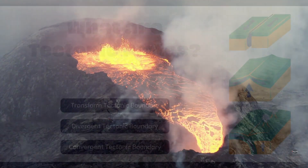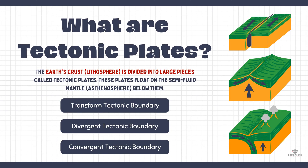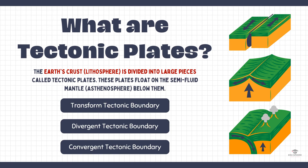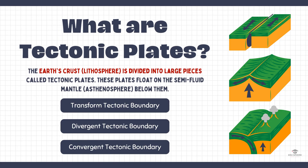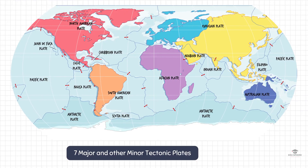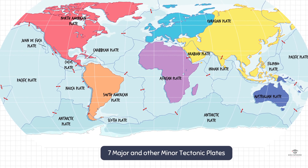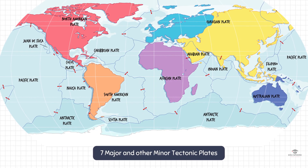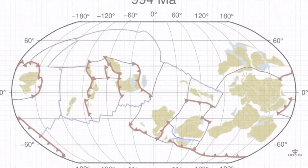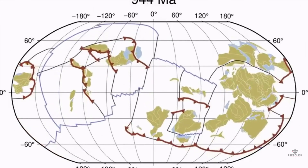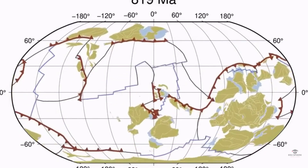Now, let us discuss the tectonic plates. The Earth's crust and the upper mantle are broken into many plates called tectonic plates, that are like pieces of a jigsaw puzzle. As you can see in this world map, there are seven major plates that make up 94% of the Earth's surface, and many smaller plates making up the other 6%. The tectonic plates are in motion, and it is thought that they have been in motion since early in Earth's history.